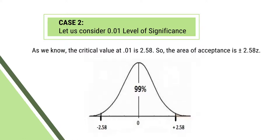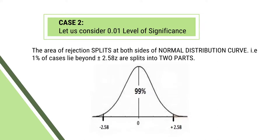Now let us consider the 0.01 level of significance with respect to the type of test. As we know, the critical value at 0.01 level is 2.58. So the area of acceptance is between plus minus 2.58 Z. The area of rejection is the area beyond plus minus 2.58 Z. The area of rejection splits at both sides of the normal distribution curve — that is, 1% of cases lie beyond plus minus 2.58 Z, split into two parts.